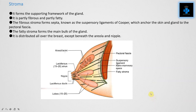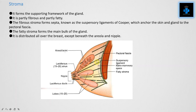Next is stroma. It forms the supporting framework of the gland and is partly fibrous and partly fatty. The fibrous stroma forms septa known as the suspensory ligaments of Cooper, which anchor the skin and the gland to the pectoral fascia. The fatty stroma forms the main bulk of the gland and is distributed all over the breast except beneath the areola and nipple.